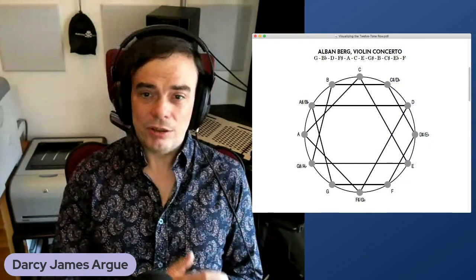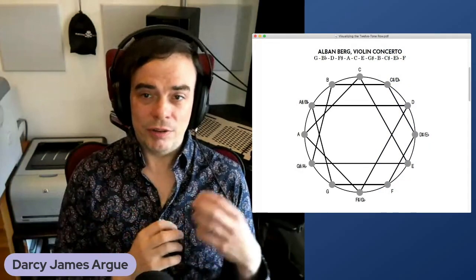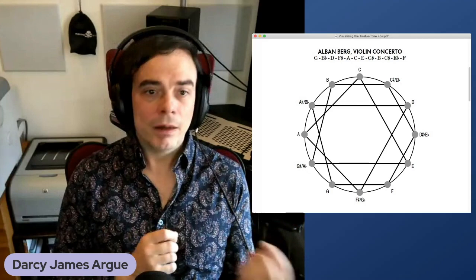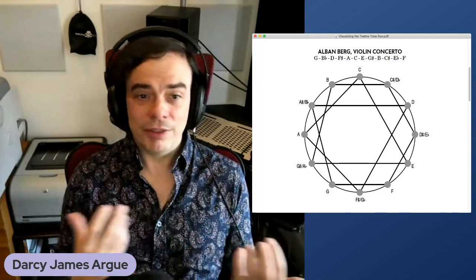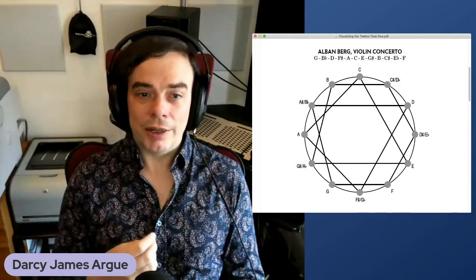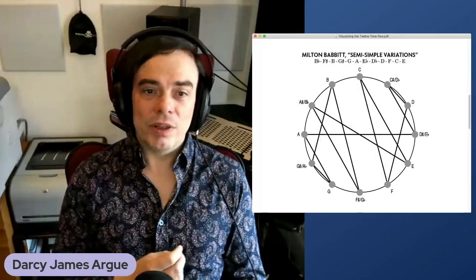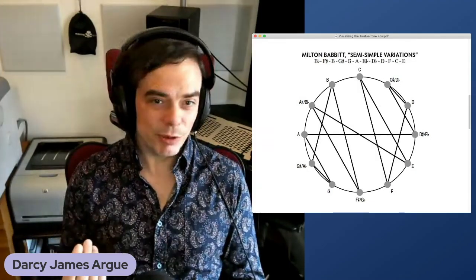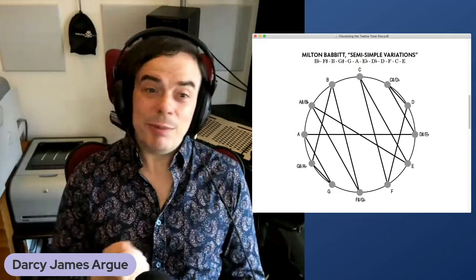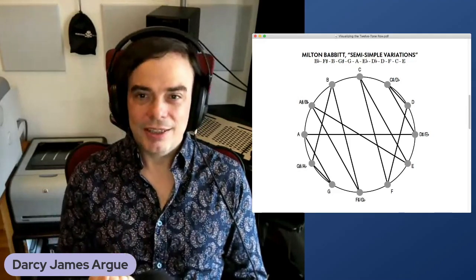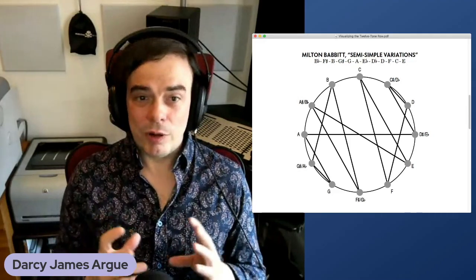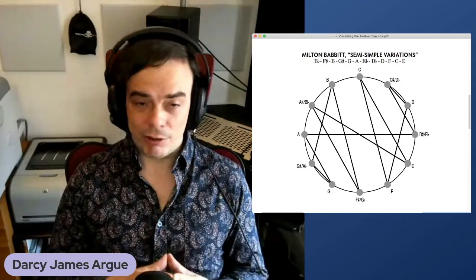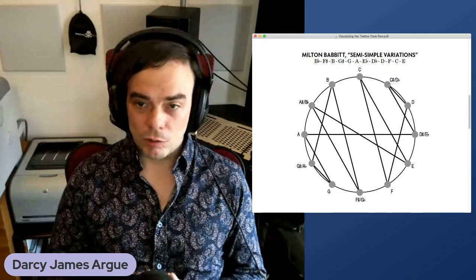And that is something that accounts for the visual pattern that you see when you connect the dots. All right, so let's compare this visualization of the Berg row from the violin concerto to a visualization of another famous 12-tone row, this one by Milton Babbitt. It's the row that he uses in semi-simple variations, which you may be familiar with the Bad Plus cover. Right away, we can see that this row has a very different character than the Berg row.